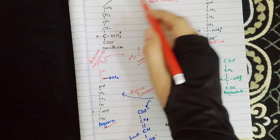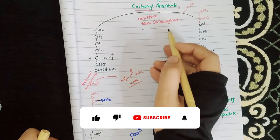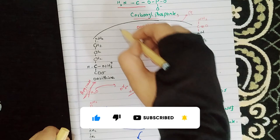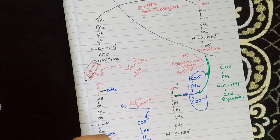The enzymes are: Arginase, Ornithine Transcarbamylase, and Carbamoyl Phosphate Synthetase-1. I hope this is understood. If you have any questions, please comment in the comment section. Thank you.